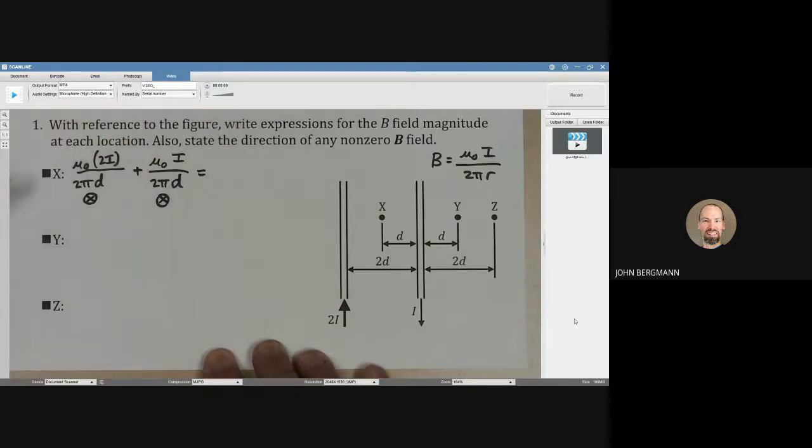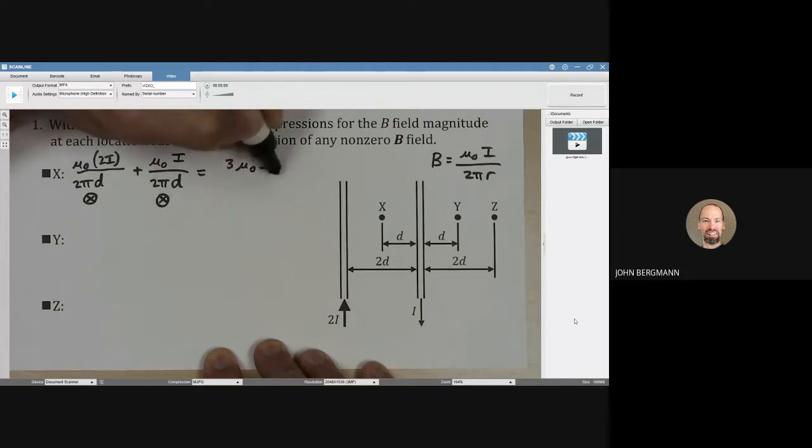What does that give us? That looks to me like a total of 1 here, and then I'm seeing one-half right there, so that looks to me like three-halves. How about 3μ₀i over 2πd? And that's going to be into the page.